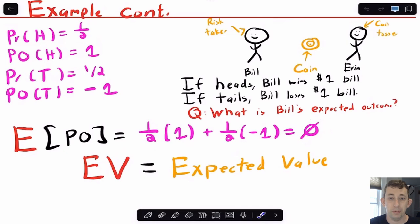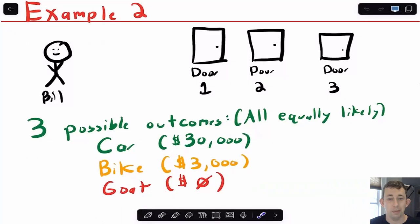That's with two outcomes, but we can do something very similar for more than two outcomes, say three outcomes. In example two we've got three doors, and Bill doesn't know what's behind each door. There could be a car worth $30,000, a bike worth $3,000, or a goat which is worth $0 because it's just a fun goat.